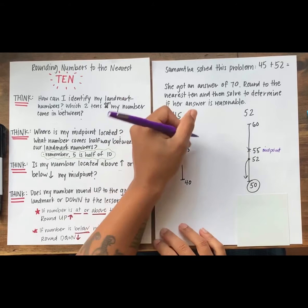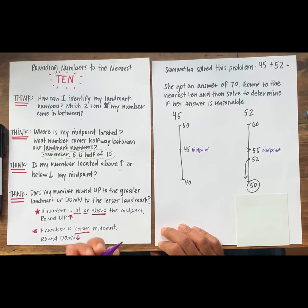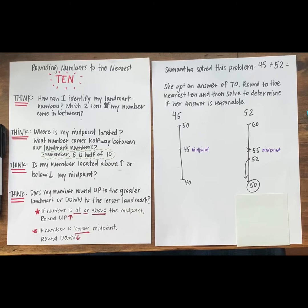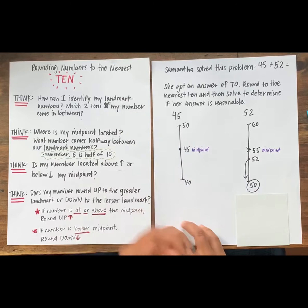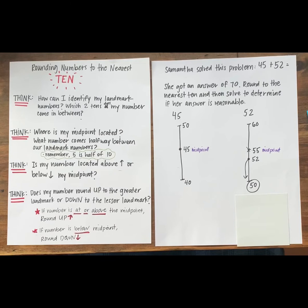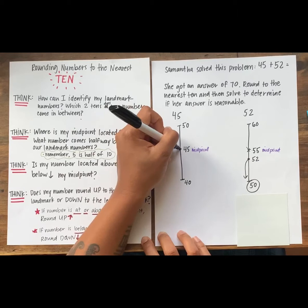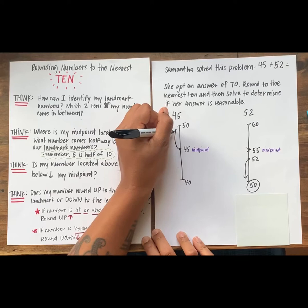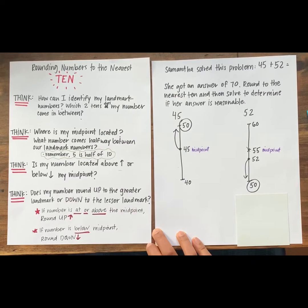Hmm. Team, I noticed that our midpoint is 45 and the number that we're rounding is 45. How do we know where our number rounds to? Say your answer out loud. Yes, we can see from our visual anchor that if our number is at or above the midpoint, we round up. Since our number is 45 and it is the midpoint, we round up. So we can say that 45 rounds to 50.